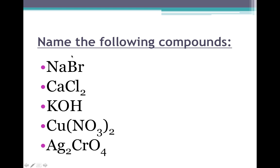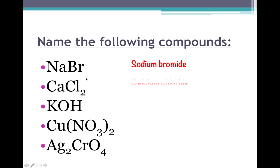For practice: NaBr is ionic because it has elements from opposite sides of the periodic table. It's binary because it has only two capital letters, so it's named like normal. The Na part is just sodium, and the Br part — bromine becomes bromide. So the name is simply sodium bromide. For CaCl2, even though there's a subscript two, it is still just a binary compound with only two capital letters, so you name it like normal. Ca is calcium, Cl is chlorine which becomes chloride, so the name is calcium chloride.